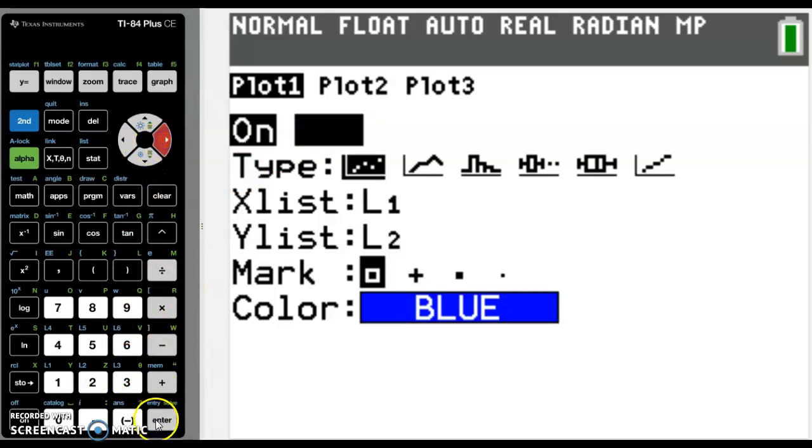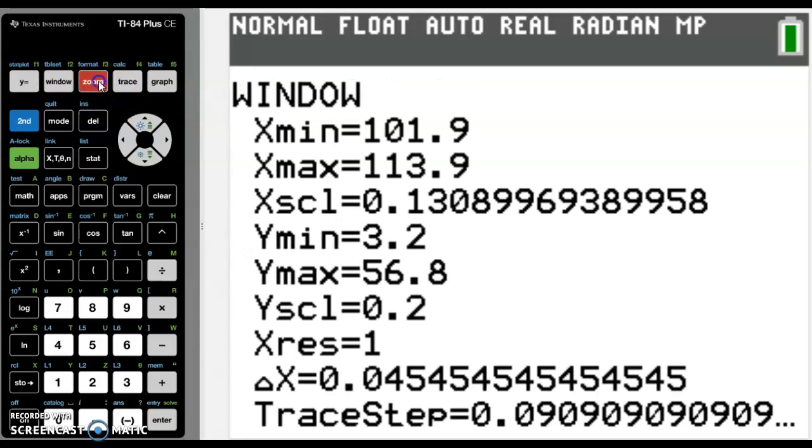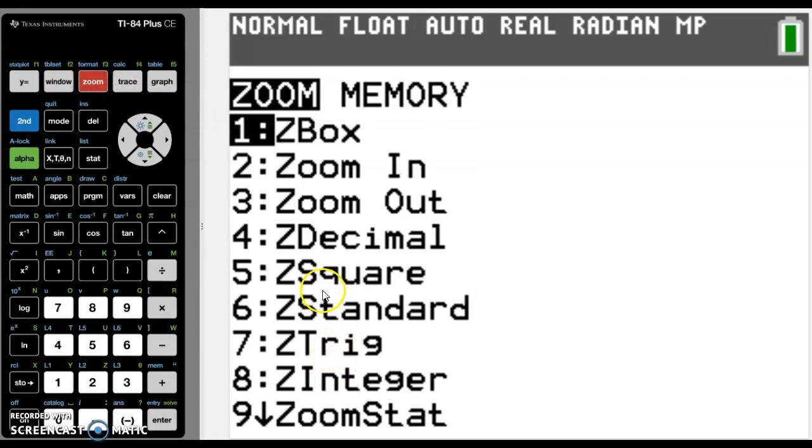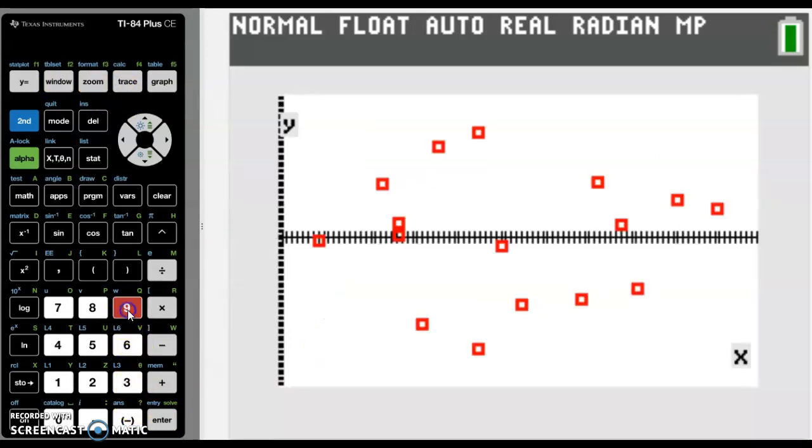Again, we could adjust it to be a perfect fit if we went to window. Or we could take the lazy option and go to zoom stat, which is number 9. And we can see there's our residual plot.